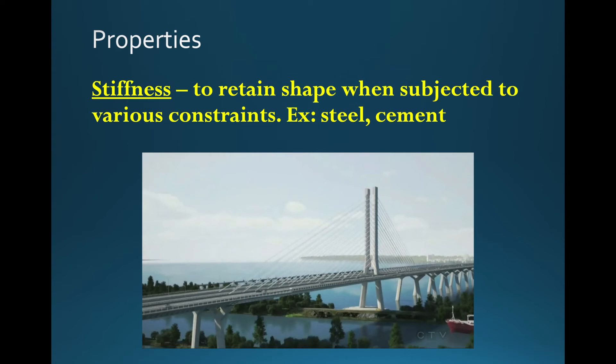Then we have stiffness. That's the ability to retain the shape even if there's a constraint on the object. So if you put a force on the object — here there's a lot of cars and trucks that pass through the Champlain Bridge — it doesn't collapse. It's very, very strong, so it's very stiff. The shape doesn't change in spite of the constraints, in spite of the weight of all these trucks and cars that pass on it. Examples would be steel or cement, which we use in construction for that very reason. They are stiff — they retain their shape, they're not going to break apart or change shape. Buildings will not start bending sideways or breaking apart.